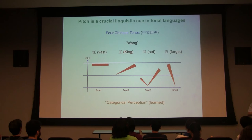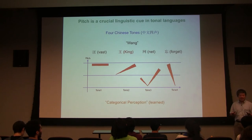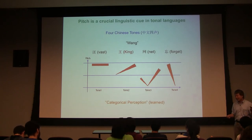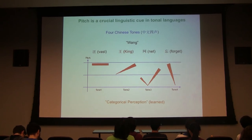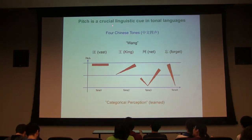This distinction is learned — there's no genetic basis for it. It's called categorical perception. Native speakers treat the four tones as if they were four distinct music notes. This is not hard to learn if immersed in the environment. For tonal languages this is a linguistic cue — slight pitch changes mean completely different words. For English, pitch is a paralinguistic cue — it conveys intonation, confidence, and skepticism.